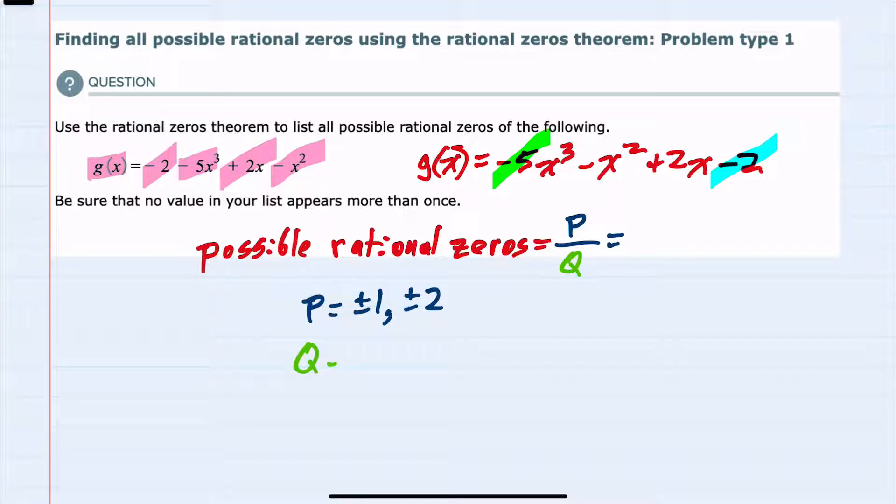For q, I'm looking at the -5. Similarly, there are only two factors for -5: 1 and 5. Each can be either positive or negative, so ±1 or ±5.